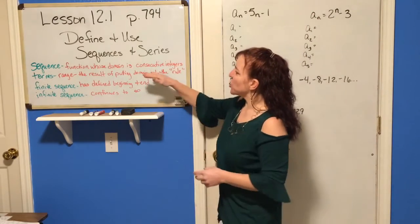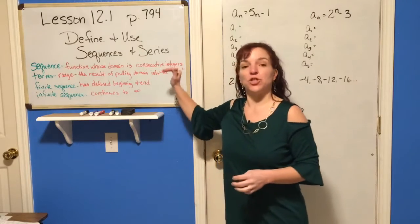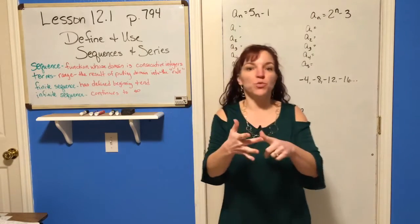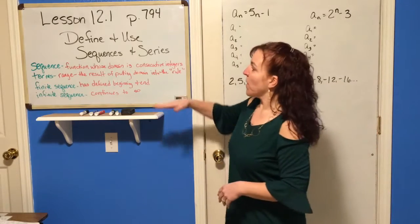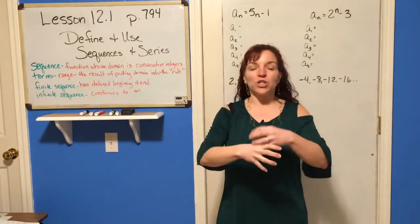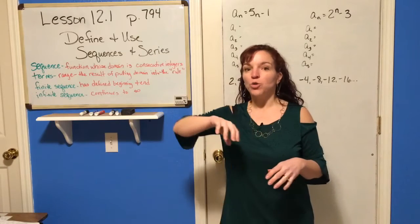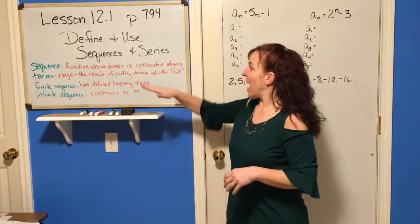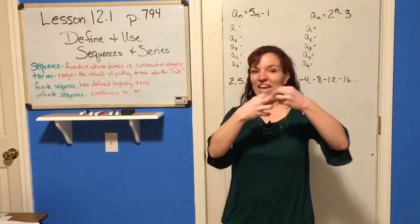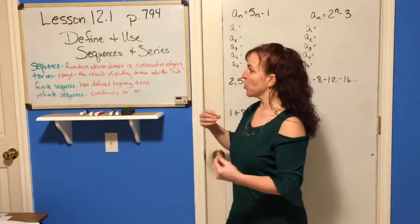A sequence is a function whose domain is consecutive integers. What that means is we're going to put in the numbers 1, 2, 3, 4, 5, 6, and so forth. The terms are the range — those are the answers you get out when you put in 1, 2, 3, 4, 5 and follow whatever the rule is. Those are your answers.